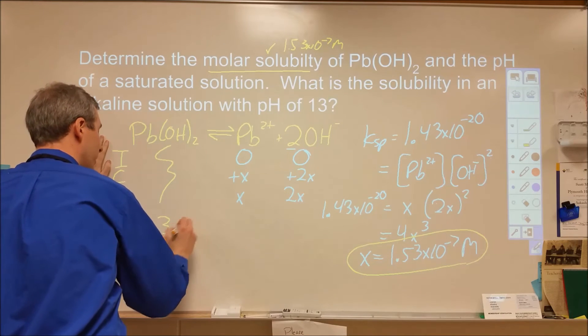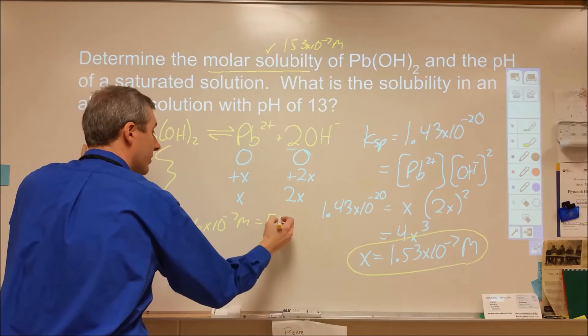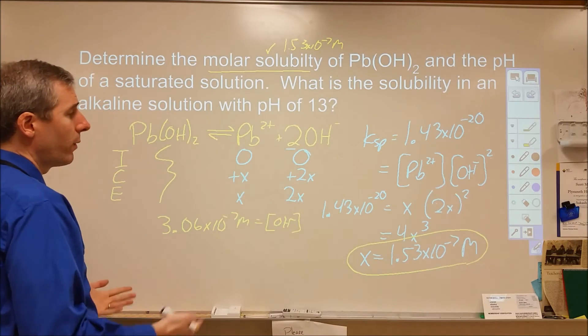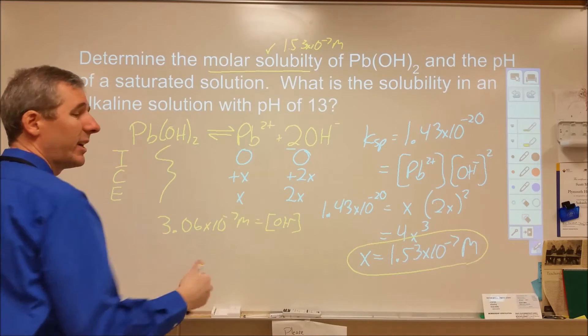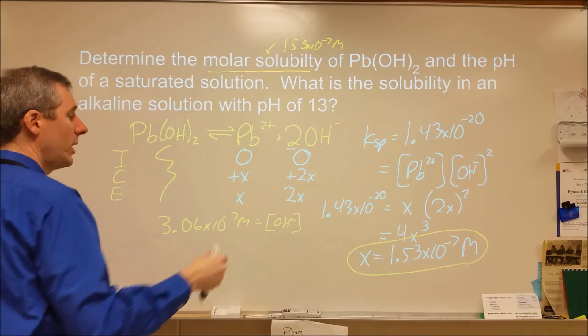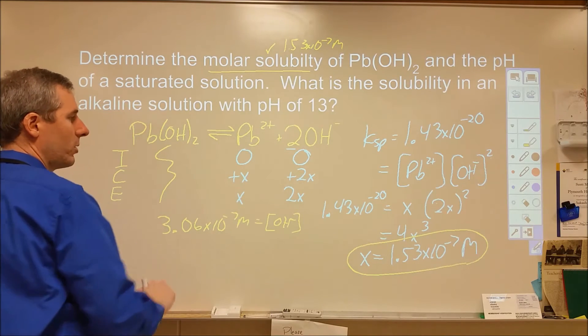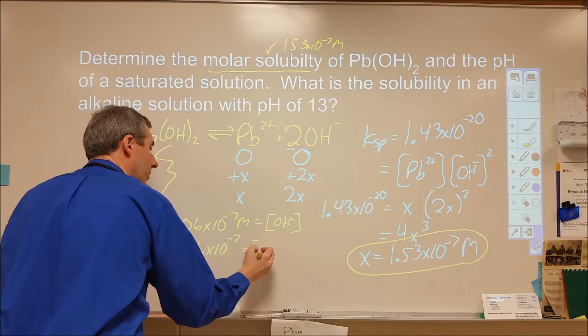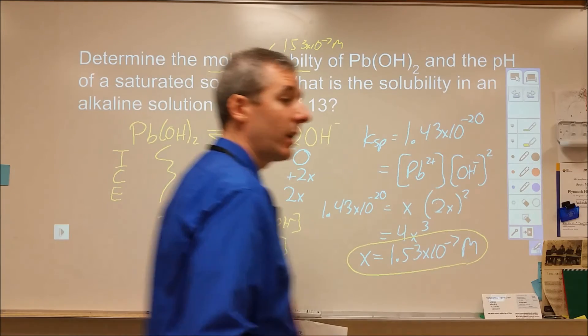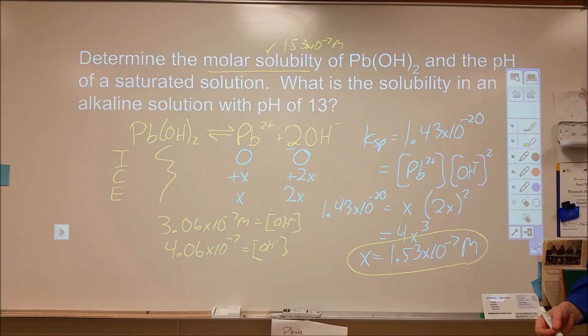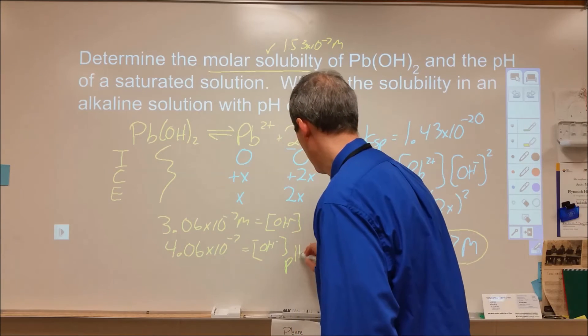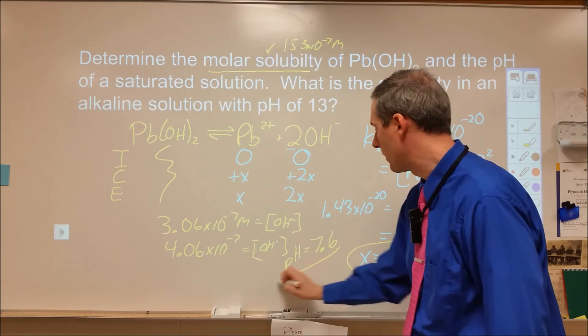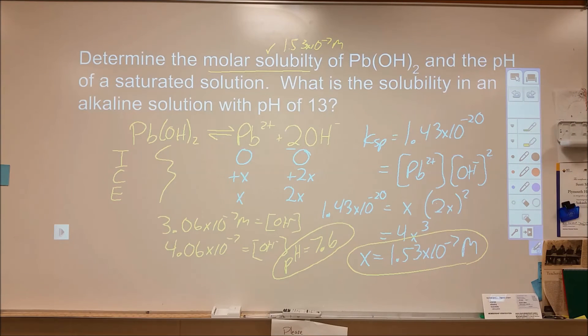2x is my hydroxide concentration, so 2 times that, which would be 3.06 times 10 to the negative 7th, is my hydroxide concentration. That's not actually that much bigger than what I ignored in the first place. If we went back and added the 10 to the negative 7th, it would be a little off. But let's assume I just start with 10 to the negative 7th and add this much. If I take the negative logarithm of that, that will give me my pOH, and I can subtract that from 14 and get my pH. The pH ends up being the negative log of that is 6.4, so subtracting that from 14 gives me a pH of 7.6.